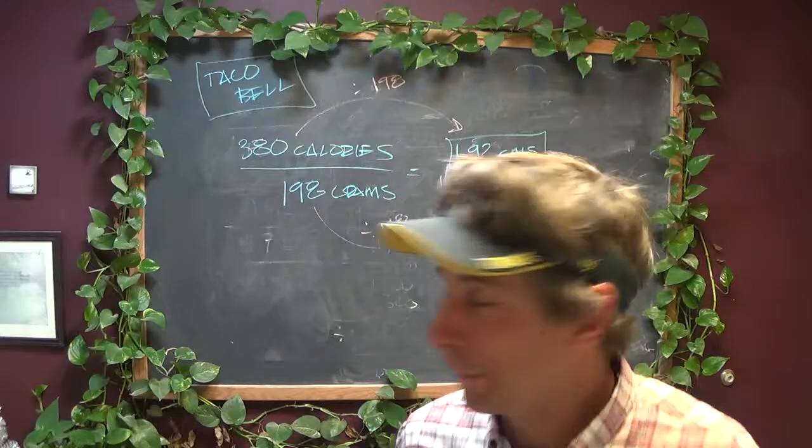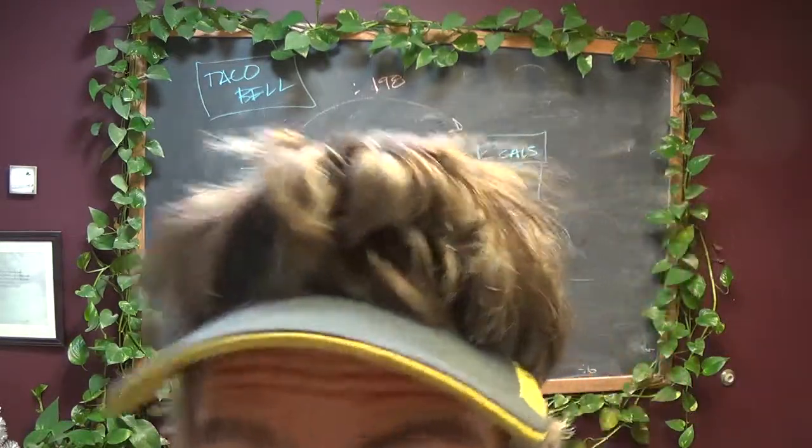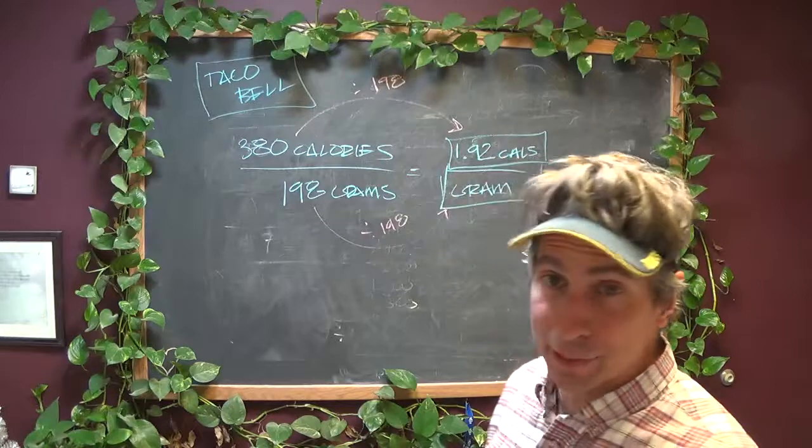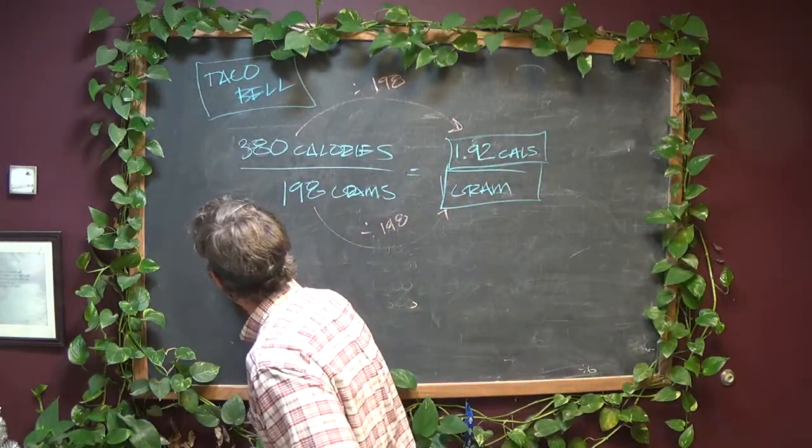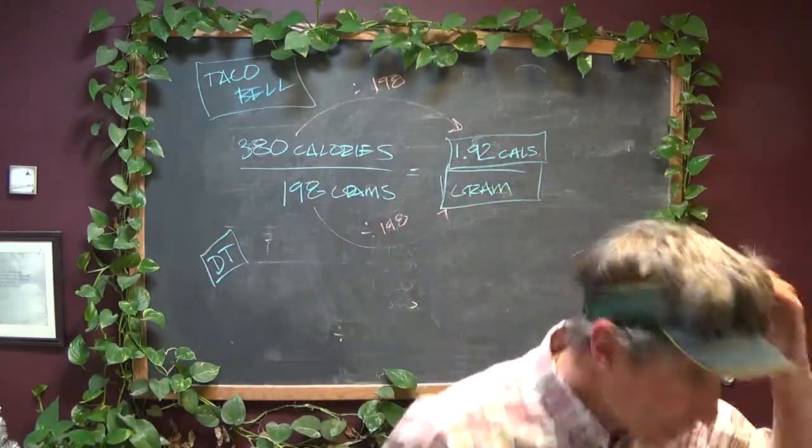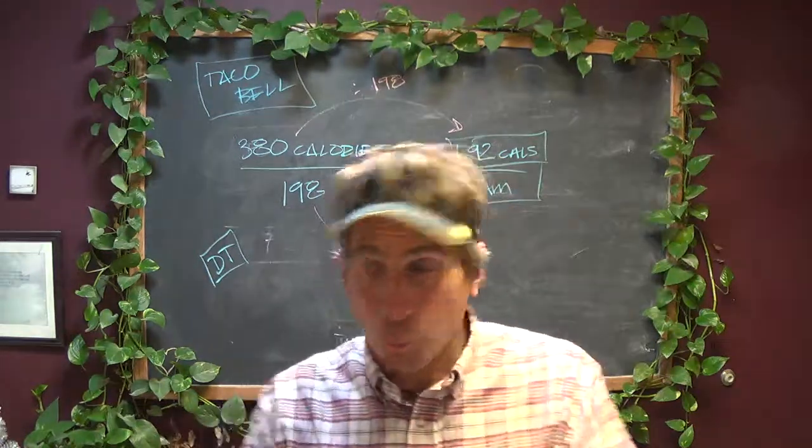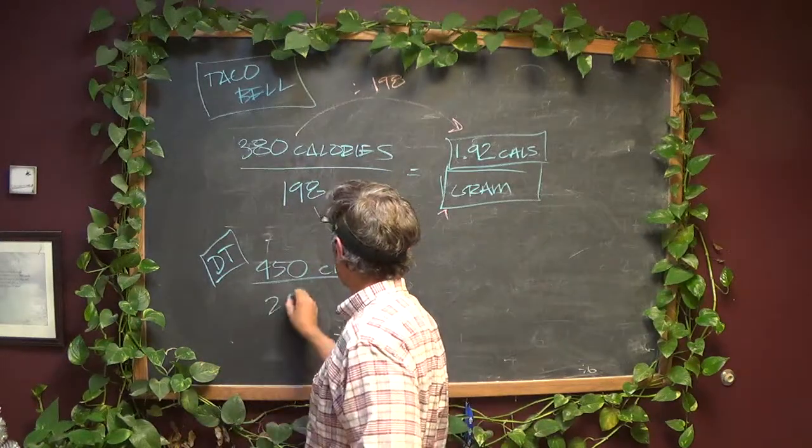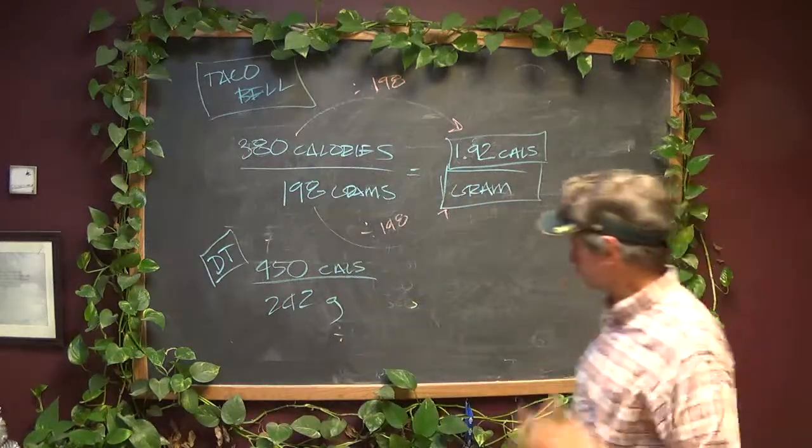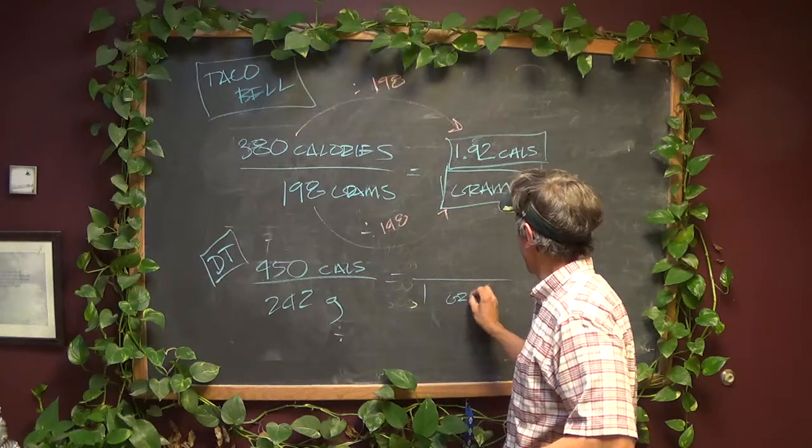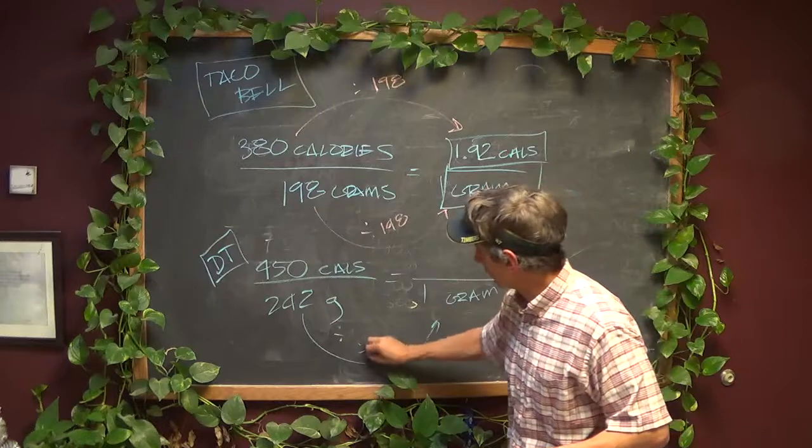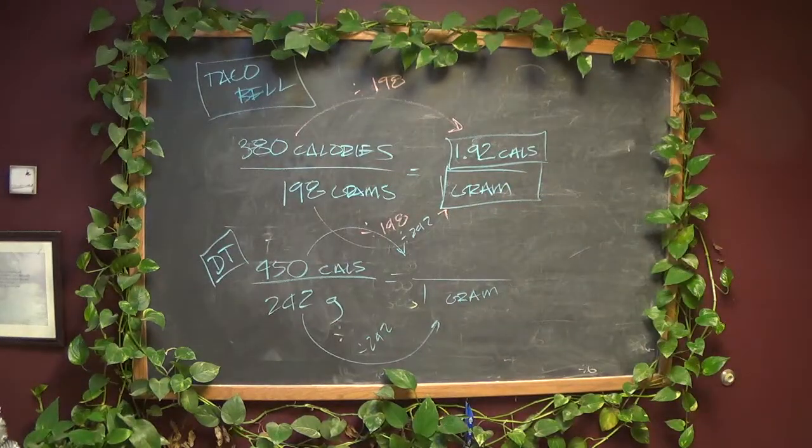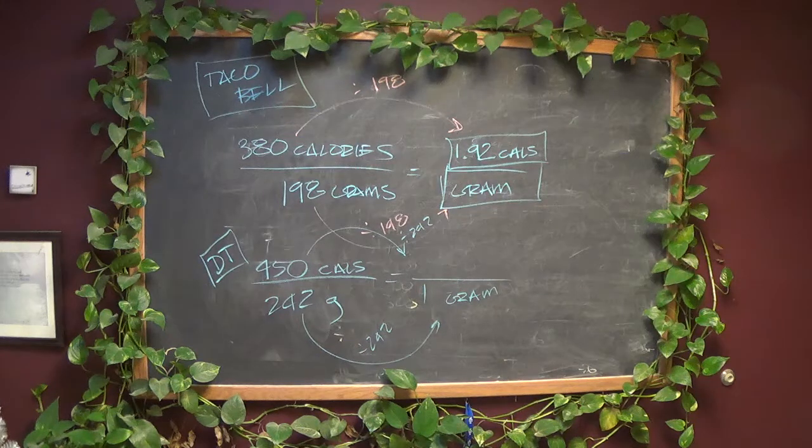So this is 1.92 calories per gram. That's Taco Bell. Del Taco and Baja Fresh exactly the same way. We'll just do Del Taco here. All we got to do is update the calories it has and the grams it has. It has 450 per 242. So 450 calories per 242 grams of burrito. To get that down to 1 gram, divide by 242.